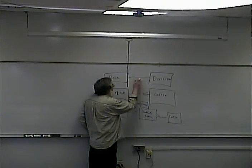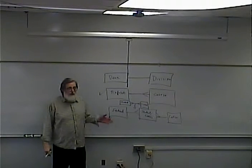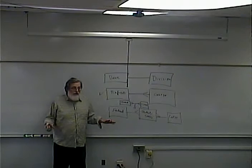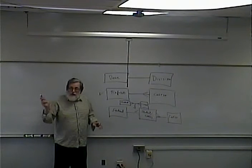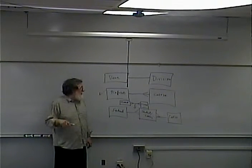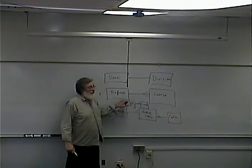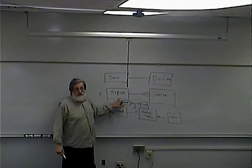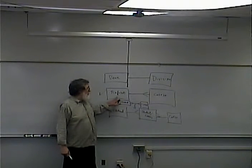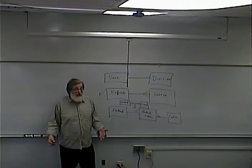Between dean and division, we had a dean table and a division table, and the assumption is that it's a one-to-one relationship. To verify that, you need to look in both directions. A common mistake students make is they look in one direction — like a course only has one professor, so it's a one-to-one. But you have to look the other direction: a professor could have how many courses? Many. So it's a one-to-many relationship.